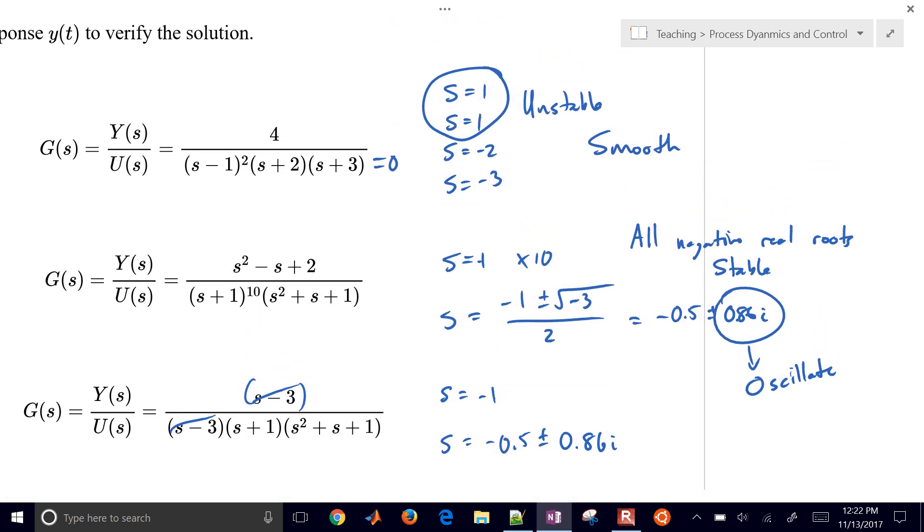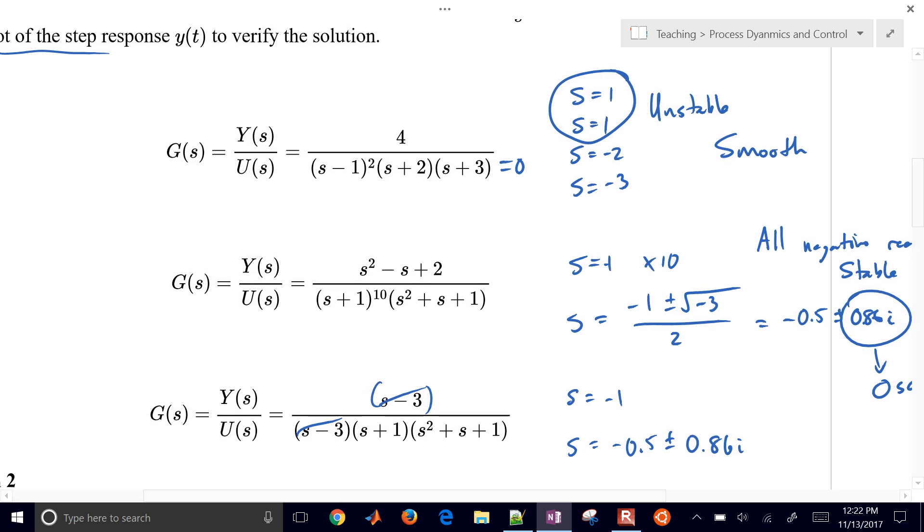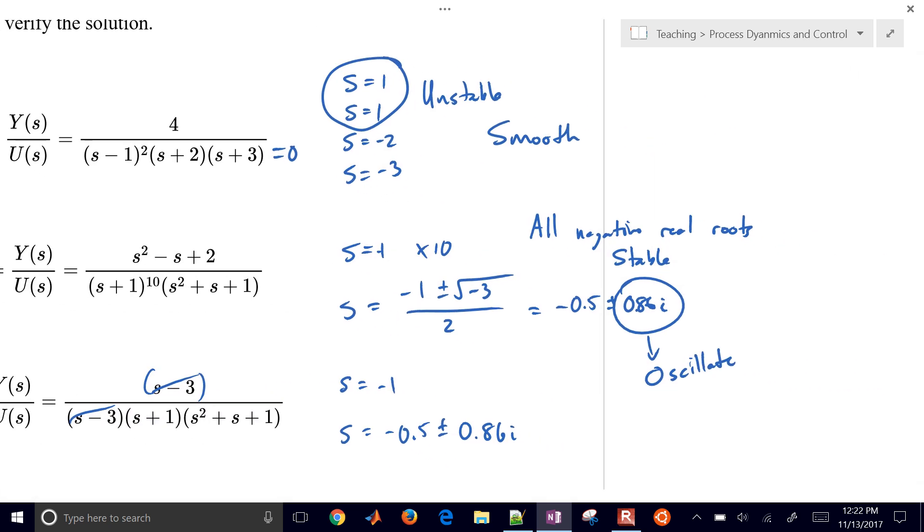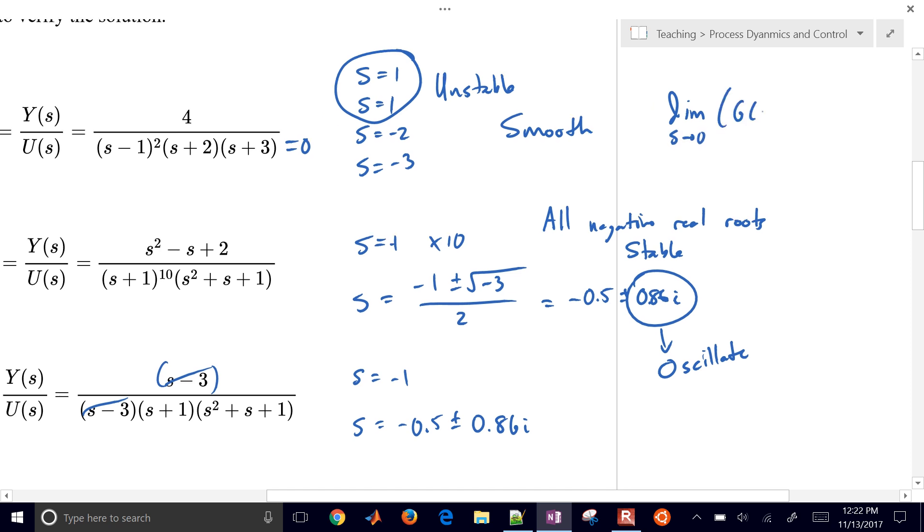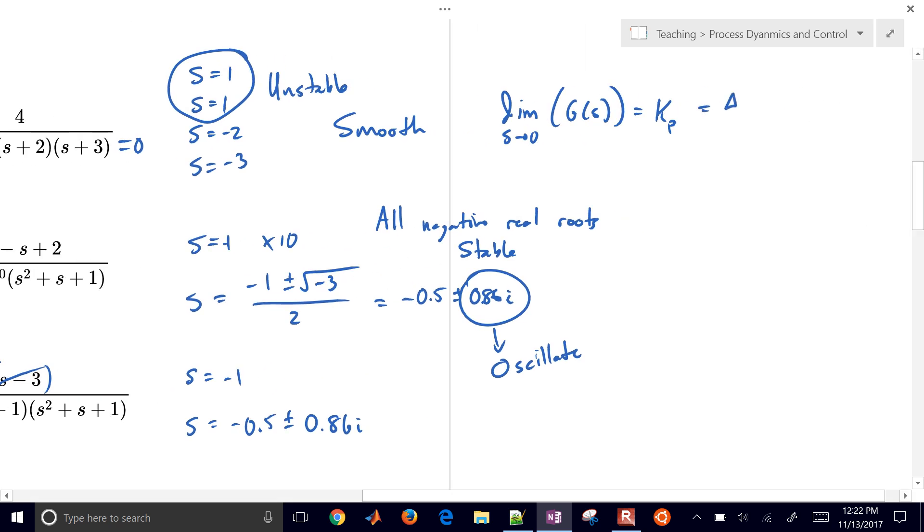Let's do a final value theorem as well. We can calculate the final value theorem. We look at the limit as s goes to 0, and we can get our gain by taking that limit, which will be kp. And we'll know that kp equals delta y over delta u, and delta u equals 1.